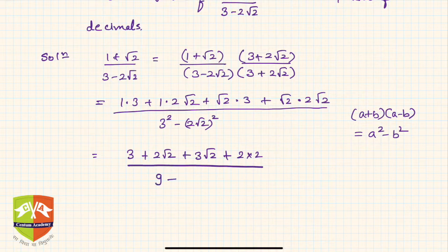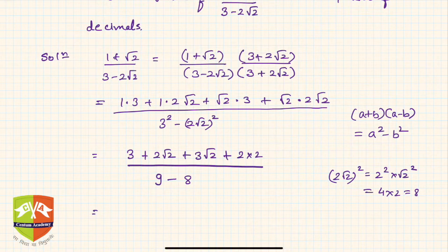And in the denominator we get 9 minus 4 times 2, that is 8. You see, 2 root 2 square is 2 square into root 2 square, so hence it is 4 into 2, hence 8.